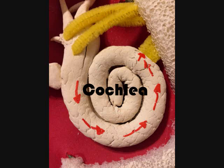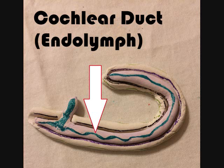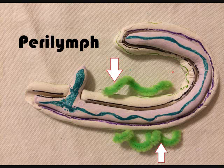The bony labyrinth encloses the membranous labyrinth involving hearing and balance. Within the cochlea, there is a cochlear duct. The cochlear duct contains endolymph, a fluid with an electrolyte concentration that differs from typical body fluids. Surrounding the endolymph is perilymph, a liquid that resembles the cerebrospinal fluid.